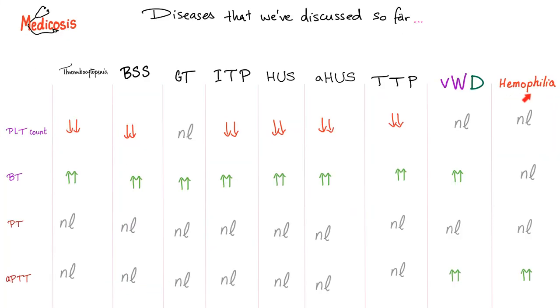In hemophilia, whether A, B, or C, you will have a normal platelet count, normal bleeding time, normal PT, but a prolonged APTT — activated partial thromboplastin time.